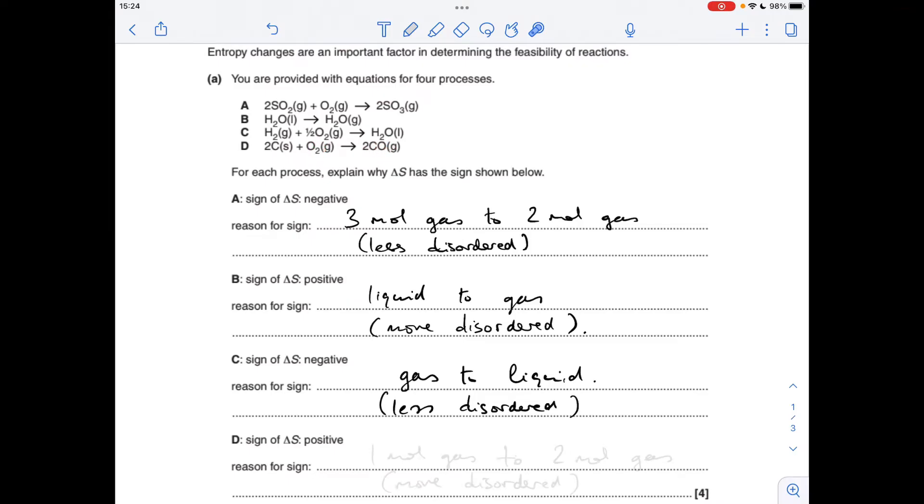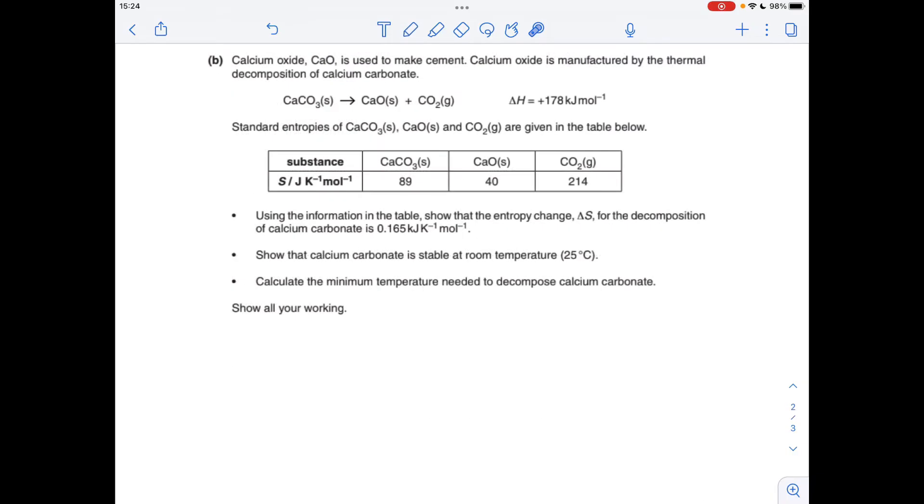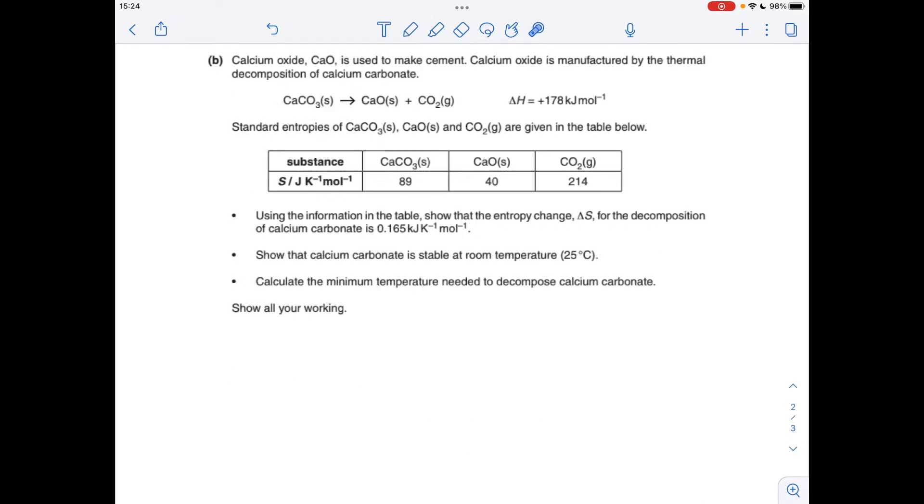Moving on to part B, the calculations. The first thing we've got to do is show that the entropy change delta S for this reaction, the decomposition of calcium carbonate, is that value there, 0.165 kilojoules per kelvin per mole. To work out the entropy change, it's the entropy of the products minus the entropy of the reactants. I call this the SPA equation, after the shop, because if you think about the minus sign there between the products and the reactants, I'll just turn that into a name. It looks like the word SPA, and it helps me remember it's products minus reactants.